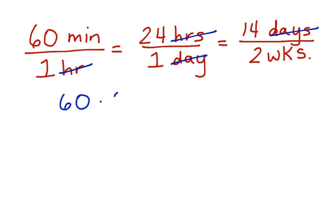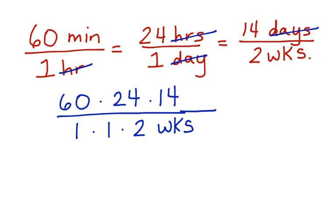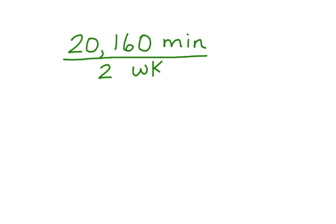So if we rewrite this, we have 60 times 24 times 14 over 1 times 1 times 2. And weeks is here. And my numerator is minutes. Now I'm going to do the multiplication. When I multiply, I have 20,160 minutes in two weeks.